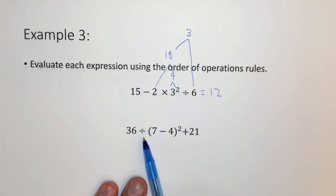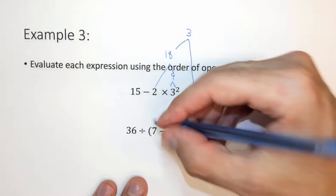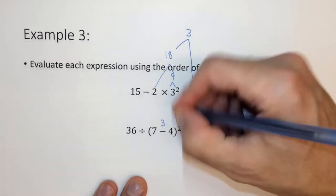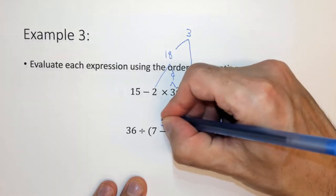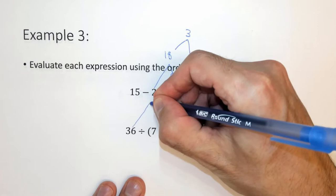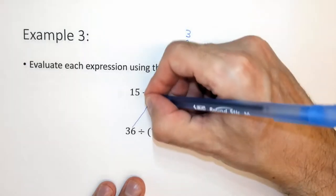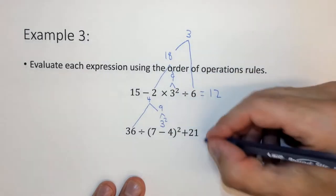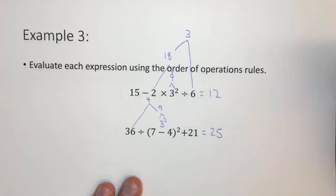In this case, we want to do the thing in parentheses first. So 7 minus 4 is 3. We then want to square that, which is 9. Now we have dividing and adding. So we want to divide first. 36 divided by 9 is 4. Now add 21, and we get 25.